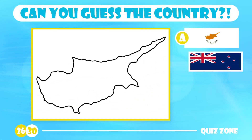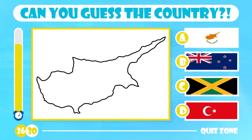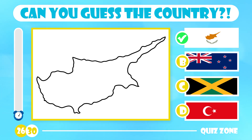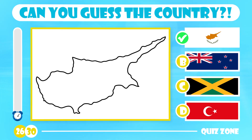Guess this one. Cyprus, New Zealand, Jamaica or Turkey? Cyprus is an island in the eastern Mediterranean with a population of 1.1 million. The island has become a significant tourist destination for many travelers.